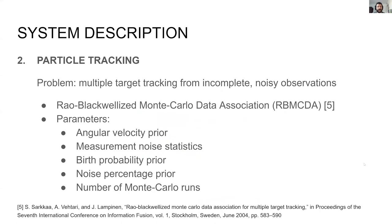Once a set of reliable DOA estimates is obtained, the next step is the generalization of the individual measurements into trajectories and temporal activations. For that, we employ the Rao-Blackwellized Monte Carlo Data Association algorithm, or RBMCDA. This algorithm is a kind of Kalman filter or tracker, and has a big number of parameters, including priors of angular velocity, event birth and noise percentage, statistics of the measurement noise, and number of Monte Carlo trials, among others.